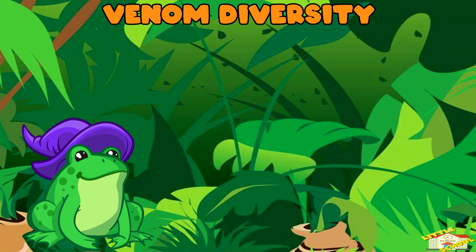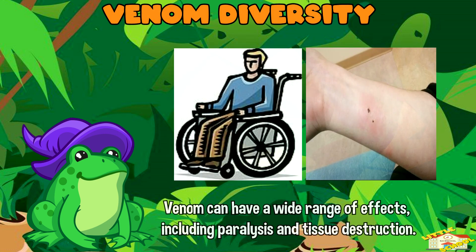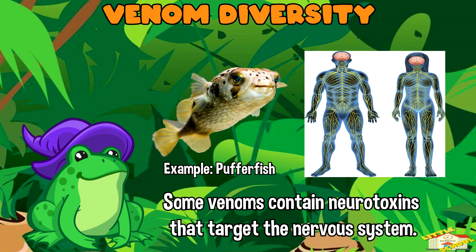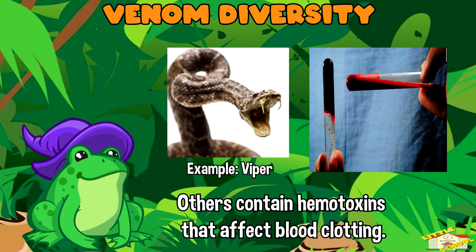Venom diversity: venom can have a wide range of effects, including paralysis and tissue destruction. Some venoms contain neurotoxins that target the nervous system, while others contain hemotoxins that affect blood clotting.